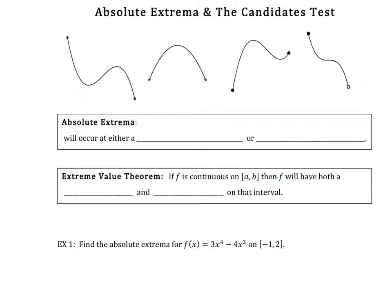Last unit we were justifying local extrema — local max and mins — which we used the first derivative test. But what happens if you're finding the absolute extrema? Absolute means the absolute highest point or lowest point.